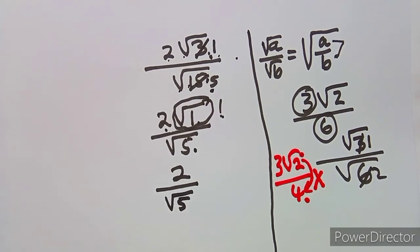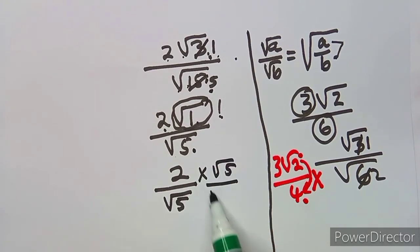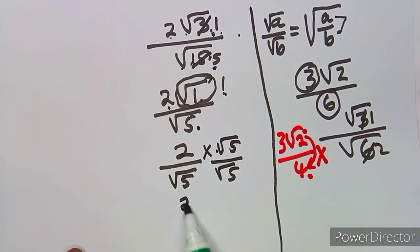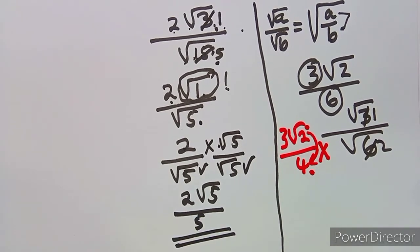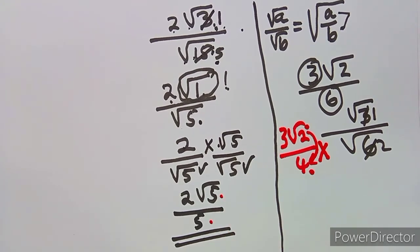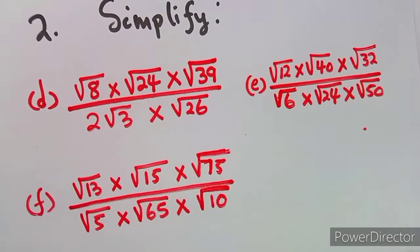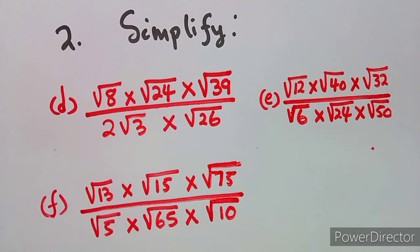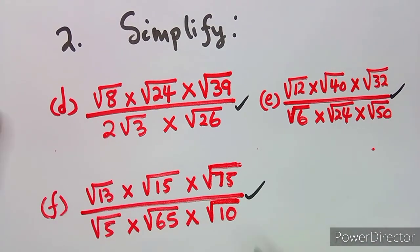We cannot simplify square root of five further, so we are back to our normal rationalizing. Multiply by square root of five over square root of five. Two times square root of five gives two square root of five, over square root of five times square root of five which is five. Note that someone might be tempted to divide the two and five — that is wrong. This one is inside the square root, this one is outside; they do not have any relationship. Your final answer is two square root of five over five. You can try the remaining questions on your own.